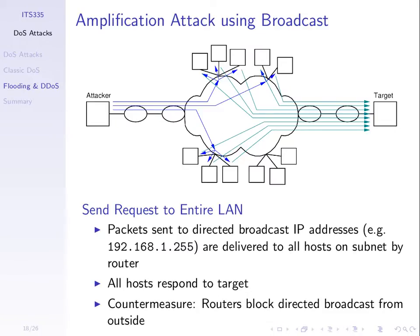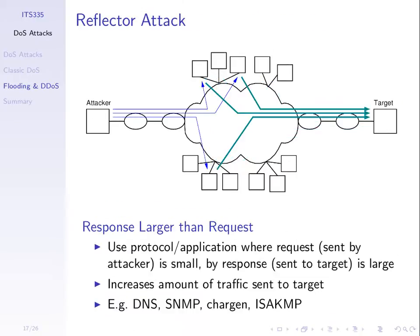Another form of amplification attack uses the broadcast feature of the internet. We can send one message to a particular network, and if we use a special destination address, that message will be delivered to all hosts on that network. Broadcast means you send one message from the source, but it's delivered to all hosts in some network. If we can take advantage of that, the attack can be even more successful — it's more amplification.